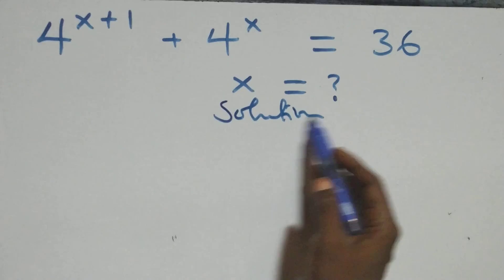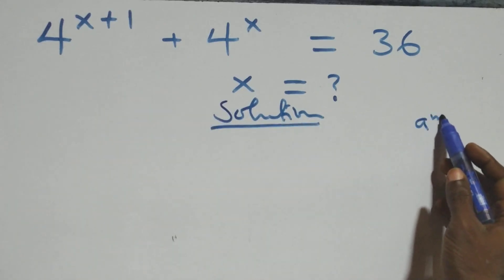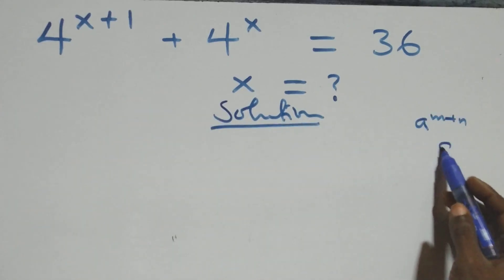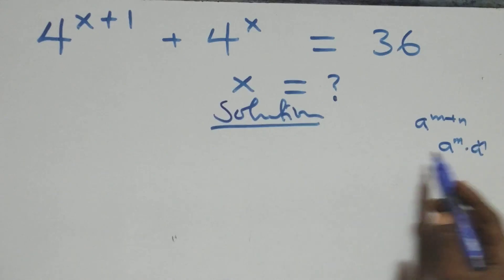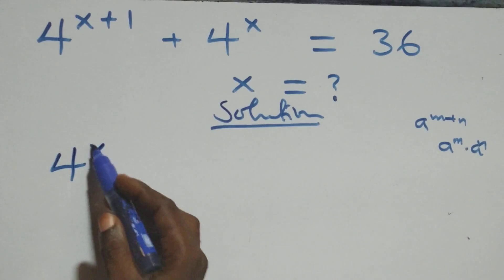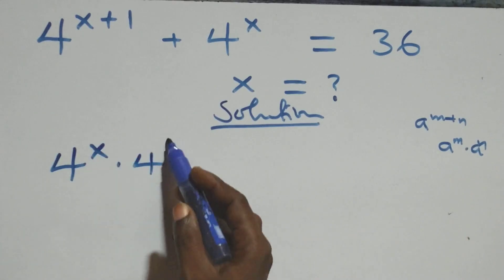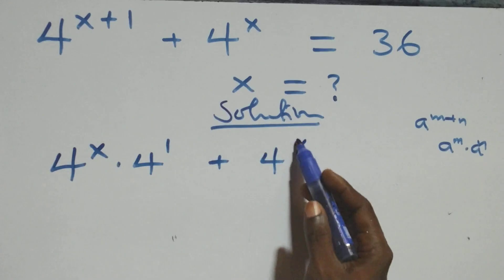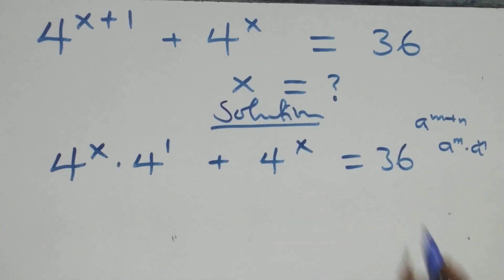What we have here is as follows: when we have a raised to power n plus n, which is the same thing as a raised to power n times a raised to power n. Here we have 4 raised to power x times 4 raised to power 1, plus 4 raised to power x, equals 36.